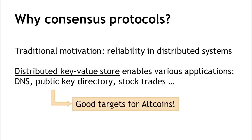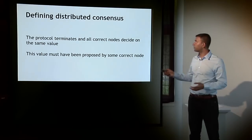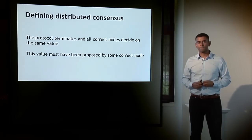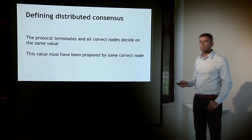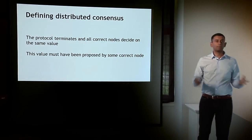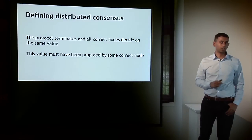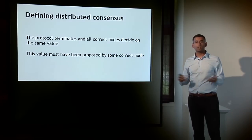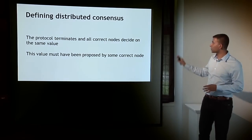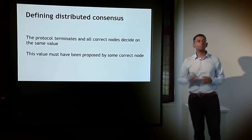The technical definition of distributed consensus is quite simple. Imagine there is a fixed number n of nodes or processes, each with some input value. A consensus protocol then runs, with two requirements: first, the protocol should terminate and all correct nodes should decide on some consensus value — I say correct nodes because some might be faulty or even malicious. Second, this agreed-upon value cannot be arbitrary, but should be a value proposed as input by at least one correct node. Let's see what this means in the context of Bitcoin.